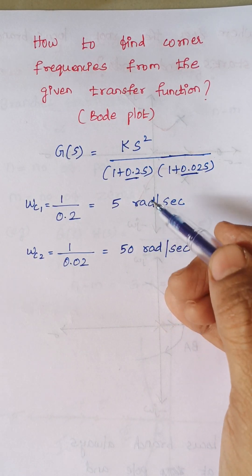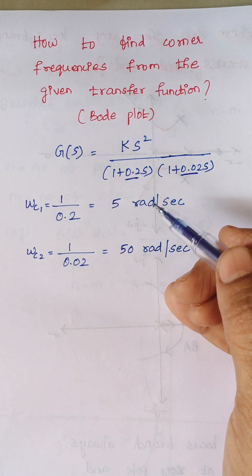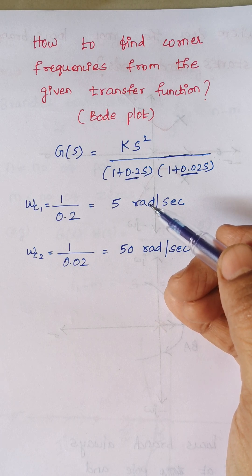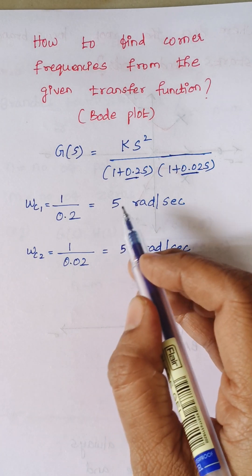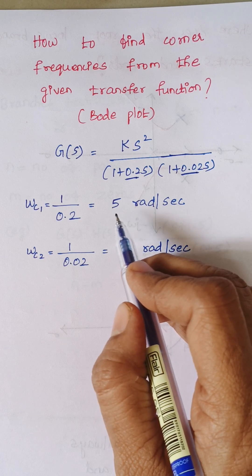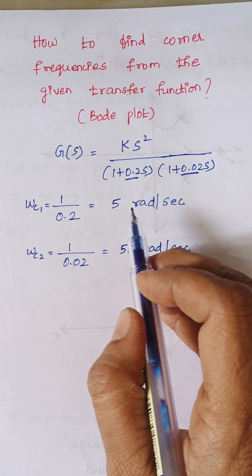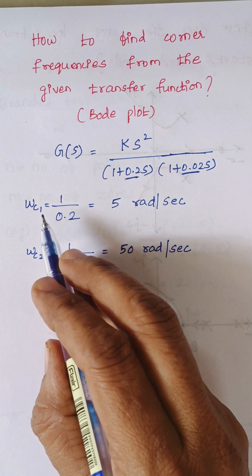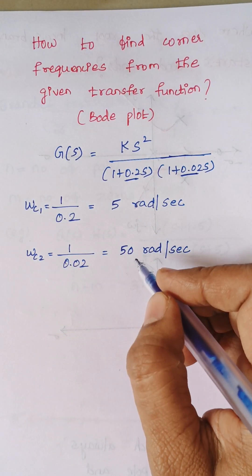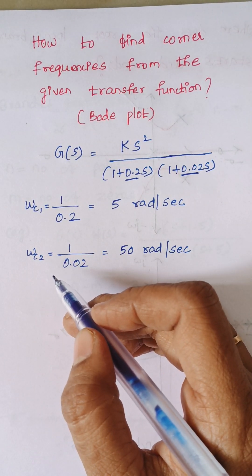So after getting the answers, we have to arrange the values in ascending order. Since here we are having the least value is 5, this is named as first corner frequency, denoted as omega C1. Here the next thing is 50, so it is omega C2, second corner frequency.